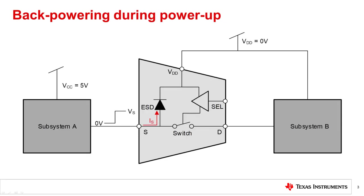Let's start with an example of backpowering. During power-up, the rail supplying power to subsystem A may power up before the rail supplying power to the switch and the downstream component, subsystem B. As subsystem A powers up, it may begin to transmit a signal to the signal path of the switch. This signal causes the switch's internal ESD protection diode to forward bias, conducting current to the VDD supply rail which has not powered up yet. This can unintentionally backpower subsystem B, potentially violating system level power sequencing requirements.